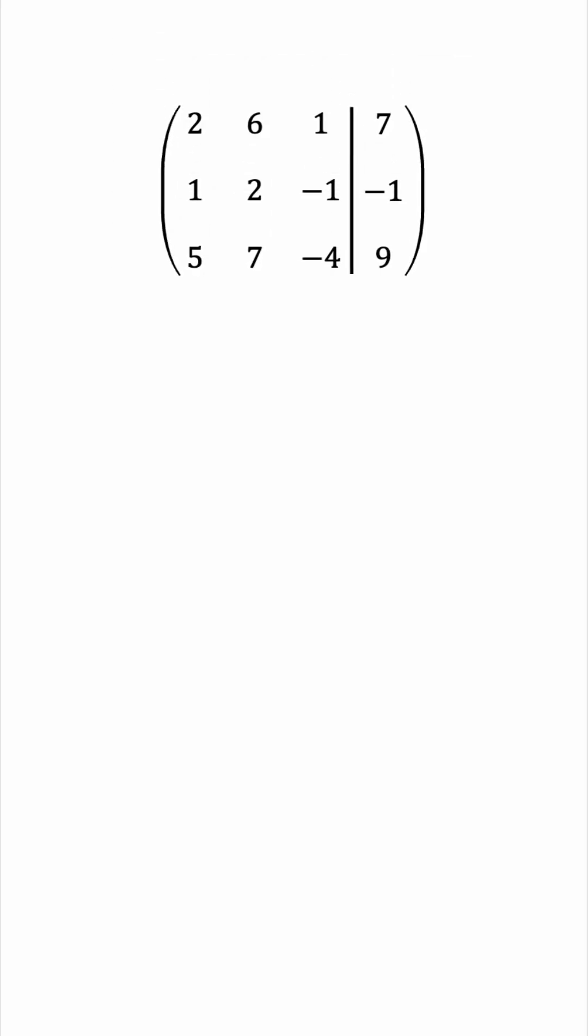We'll start by interchanging the first and second rows, giving us this matrix. Now let's subtract 2 copies of row 1 from row 2, updating it like this.